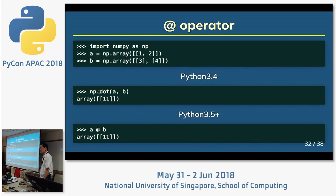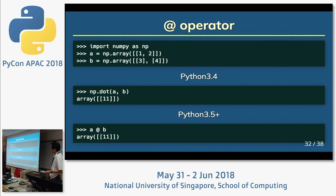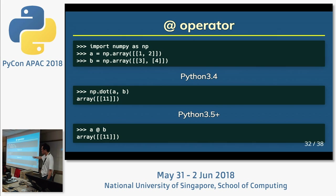Next is the @ (at-mark) operator — the matrix multiplication / dot product operator. For numpy, old style is numpy.dot(a, b); new style is a @ b. Same result.